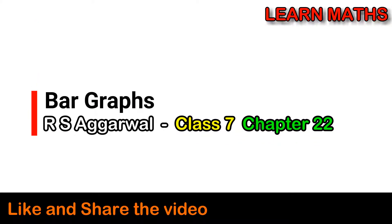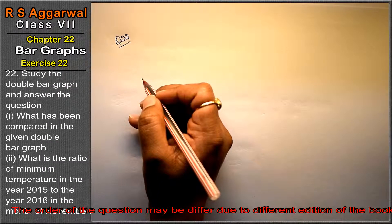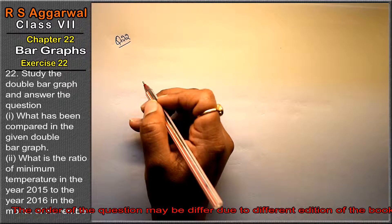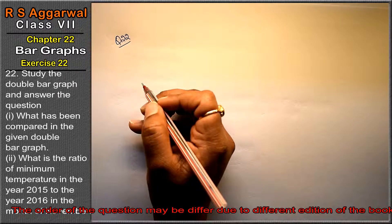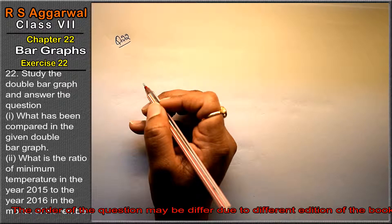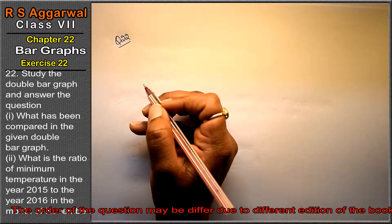Let's do question number 22 of exercise 22, that is a bar graph question. We will study the double bar graph given below. In this double bar graph, minimum temperature is given on the y-axis and months are given on the x-axis. 2015 minimum temperature is shown first, then 2016 temperature is shown.